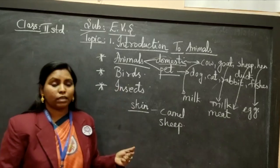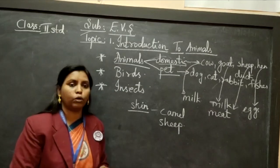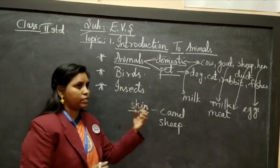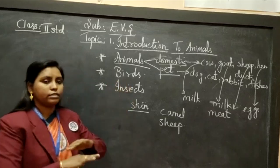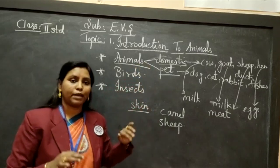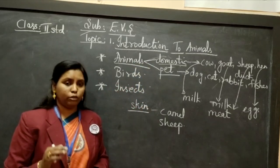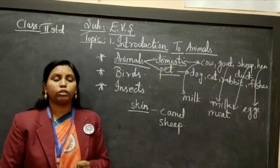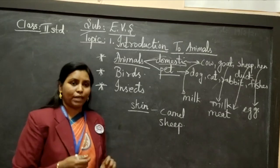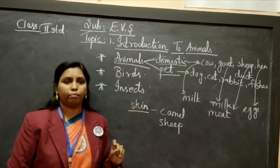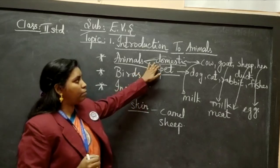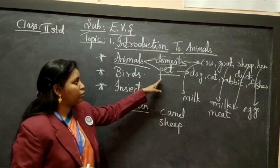So many animals are around us — we can see cow, goat, sheep, lamb (the young one of sheep), hen, and ducks. These are called domestic animals which are kept or reared at home for domestic use. One more use: horses and donkeys draw carts, carry luggage, and carry passengers. In this way, they also help us. Each and every animal is helping human beings.